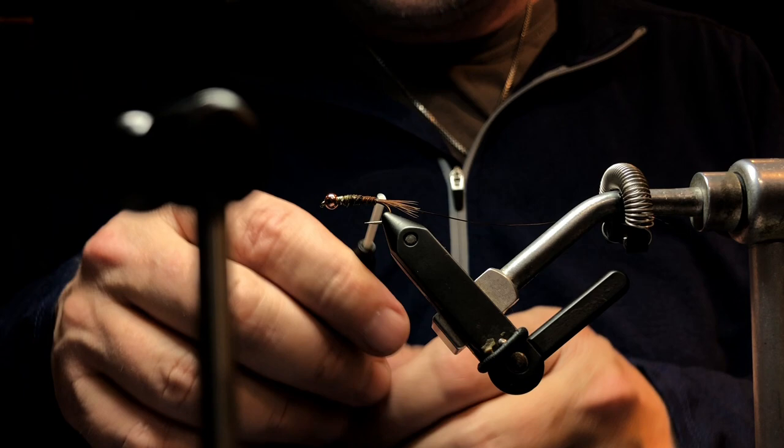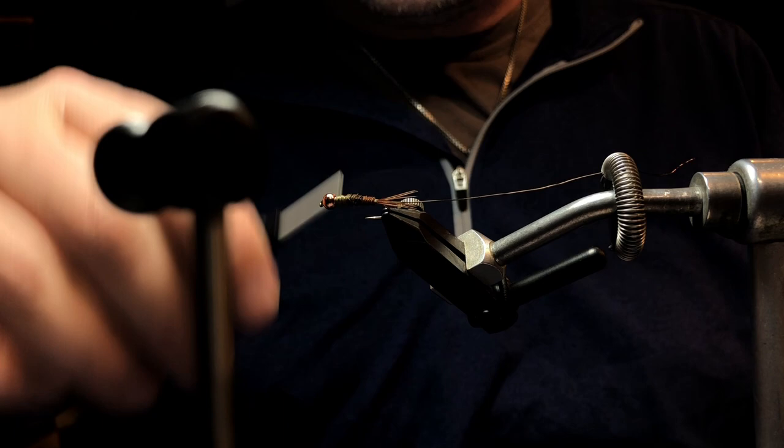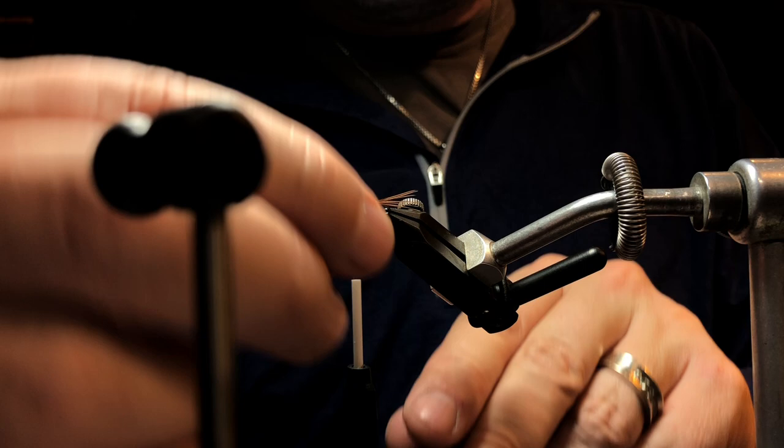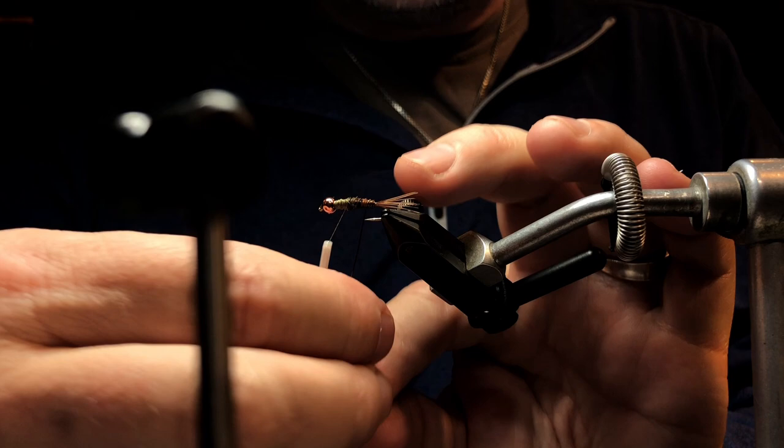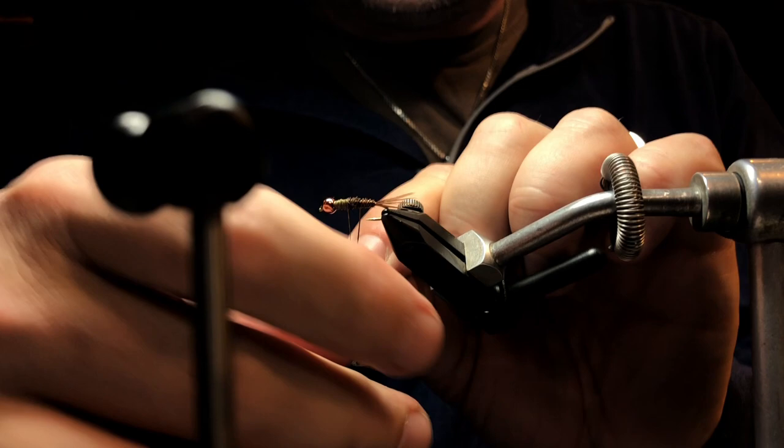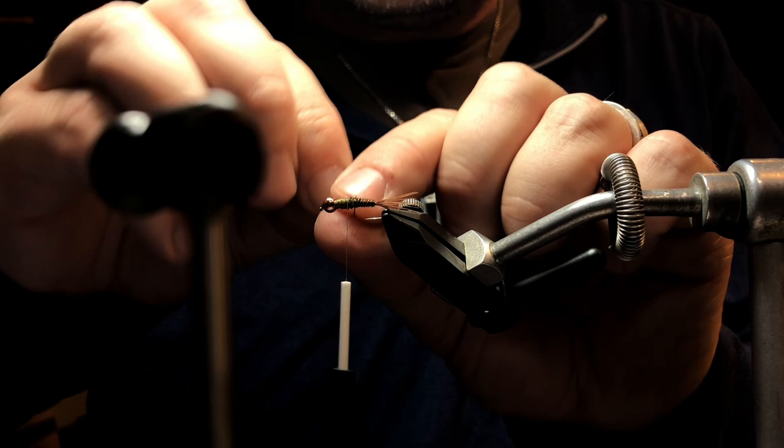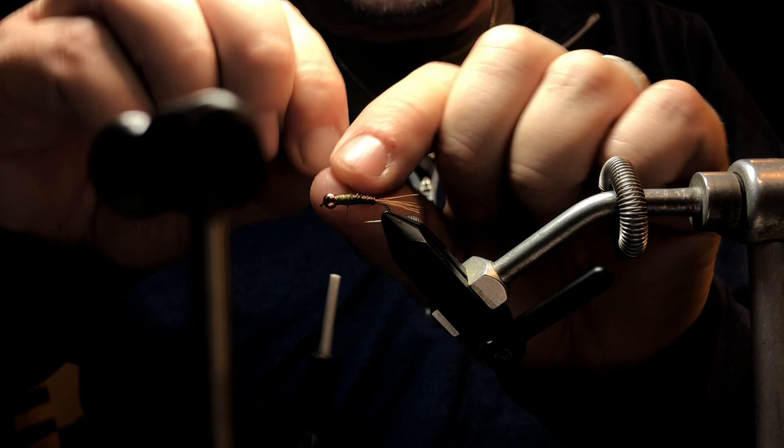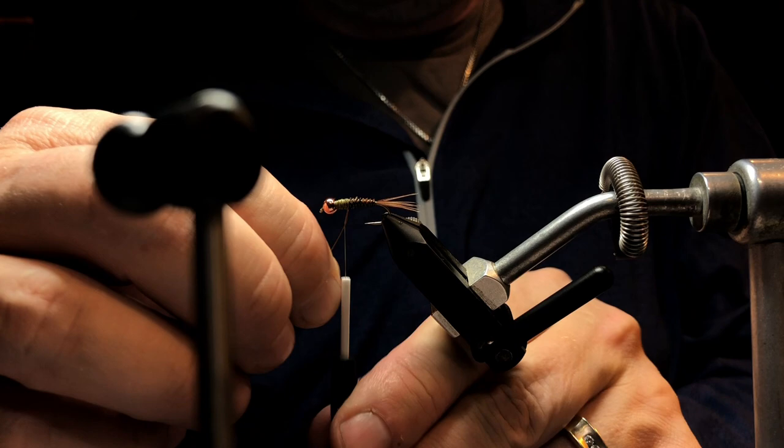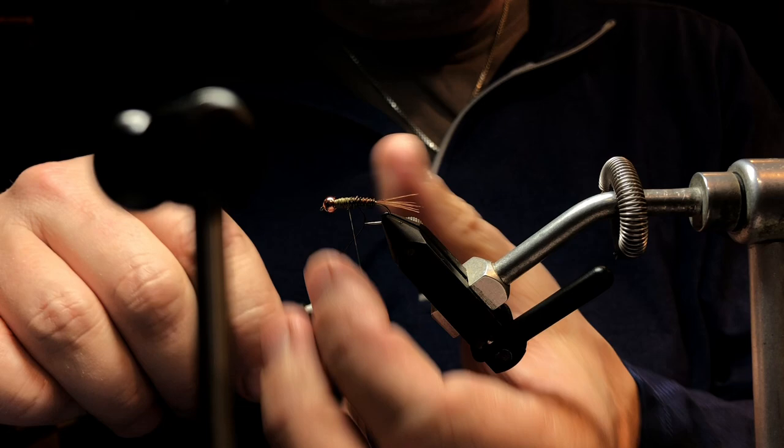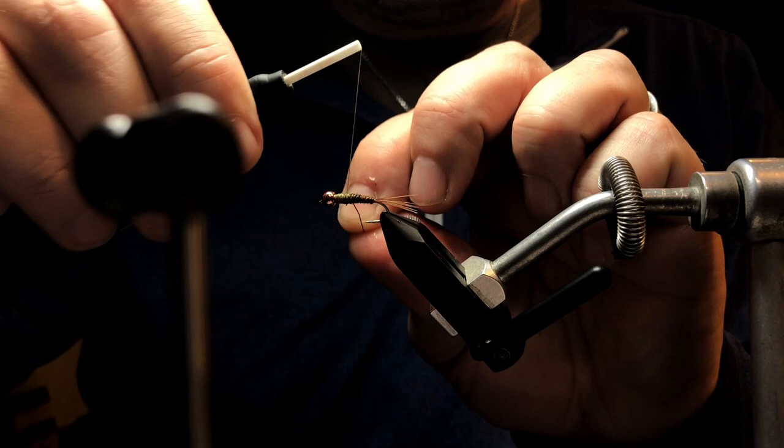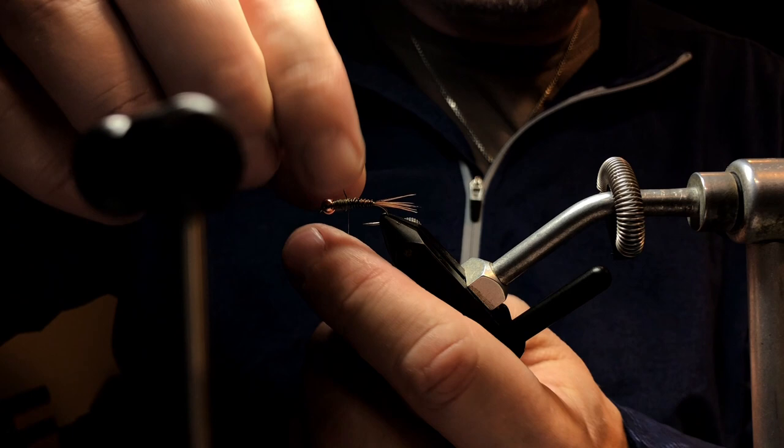I'm just going to lay down a few more thread wraps, kind of even things out up there where the thorax is going to go. Now I'm going to counter-rib that wire forward, starting from the back. I'm going to rib pretty tight—basically just enough room between the ribbing wraps for that pheasant tail underbody to pop through. I want that segmented look, but I want it to be pretty tight, and that kind of fiberousness to sort of move a little bit between those wraps. Secure that down, lock it in with about five or six crisscrossing wraps over that, and then I'm going to hold the bobbin tight while I helicopter off that medium wire.